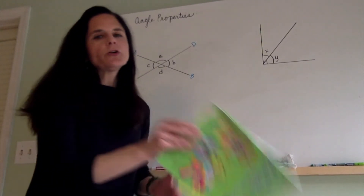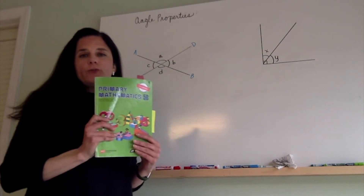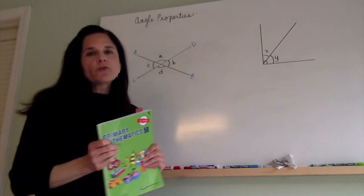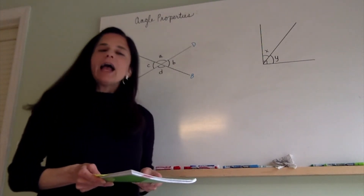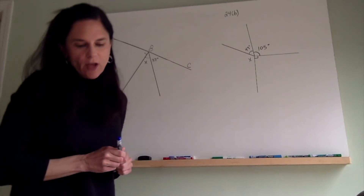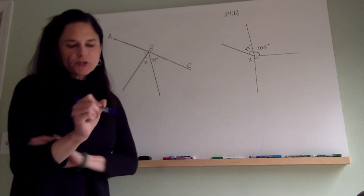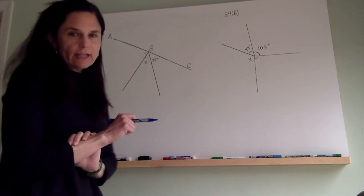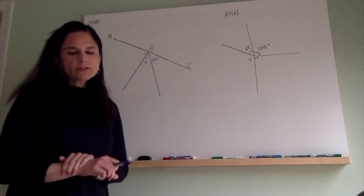I'd like for you to take your textbook and we're going to go through a couple of review problems together in this lesson. Get a whiteboard or a piece of paper, work through these with me, and we'll practice. Your homework tonight will be more practice finding unknown angles using these angle properties, and then tomorrow we'll move on to triangles. So turn to page 24 in your textbook — we're going to be doing number 24A and B. I've drawn these up on my whiteboard and I'd like for you to work these with me as you watch the video.